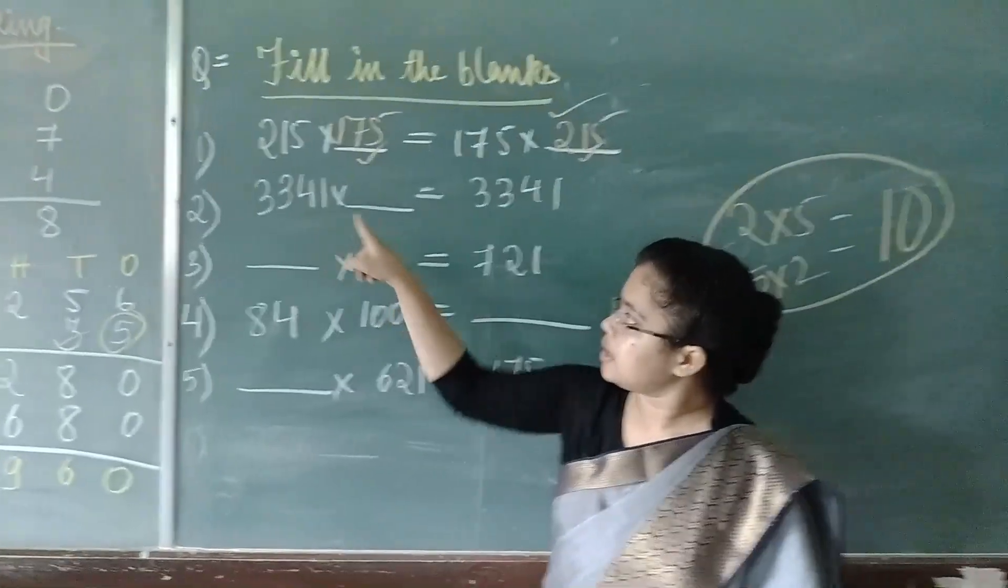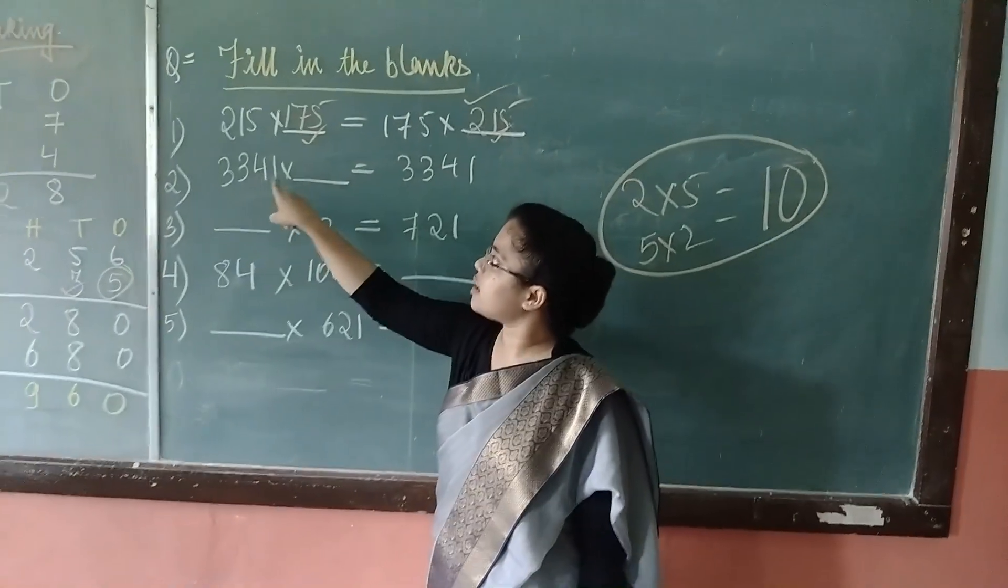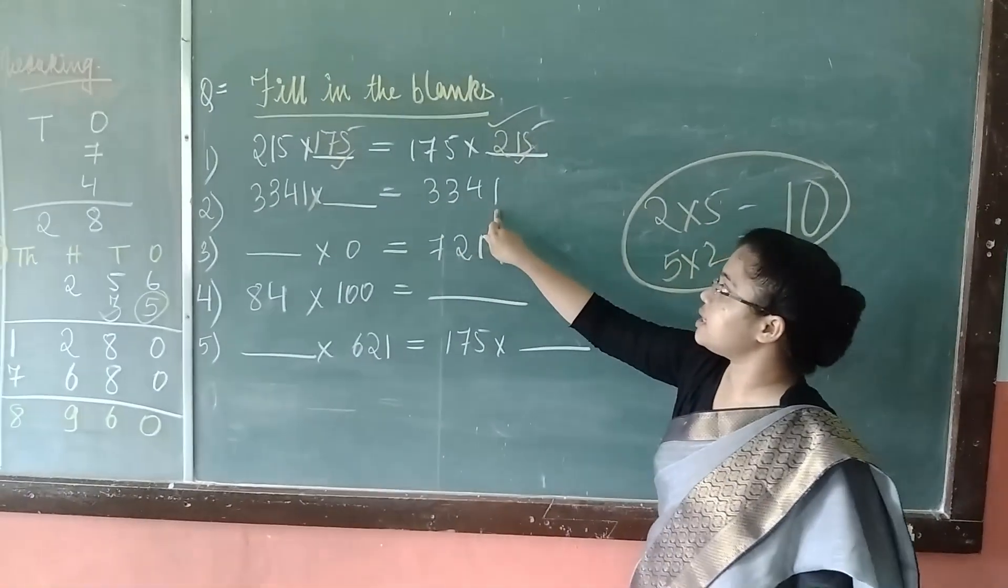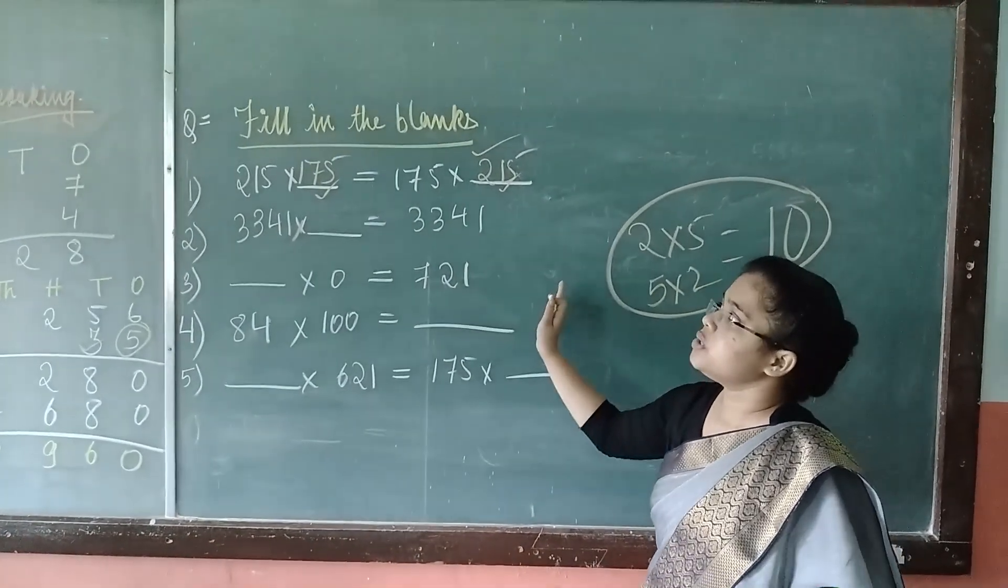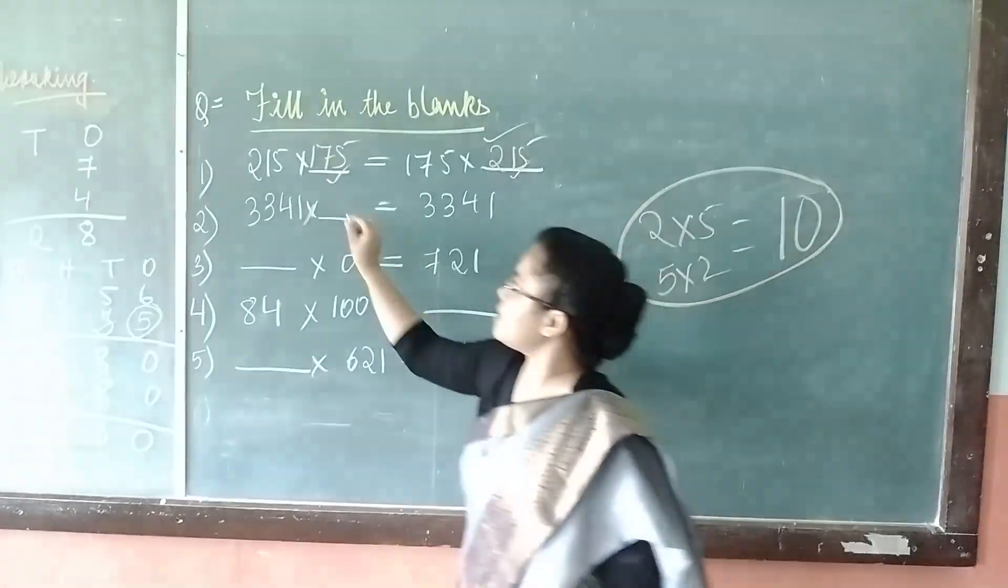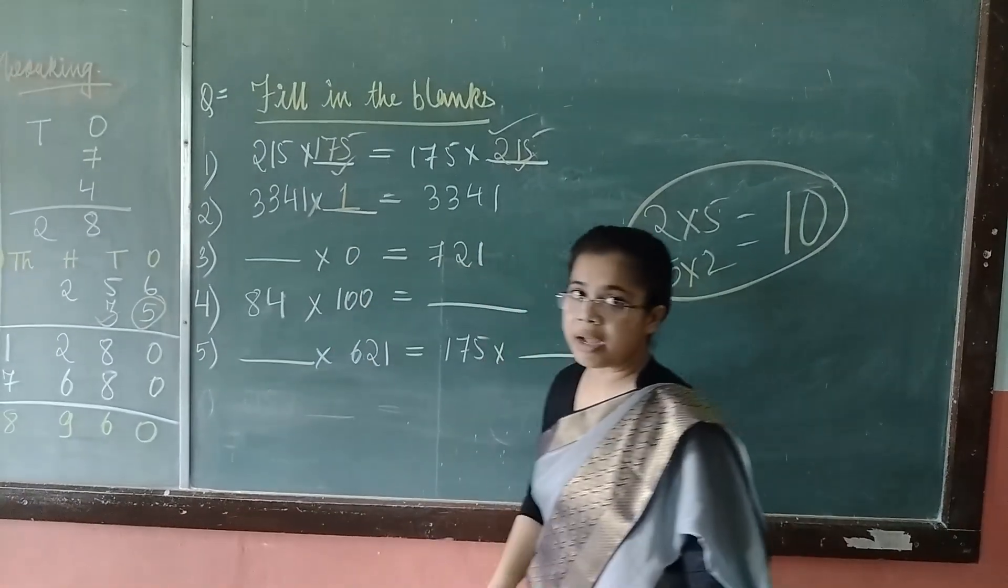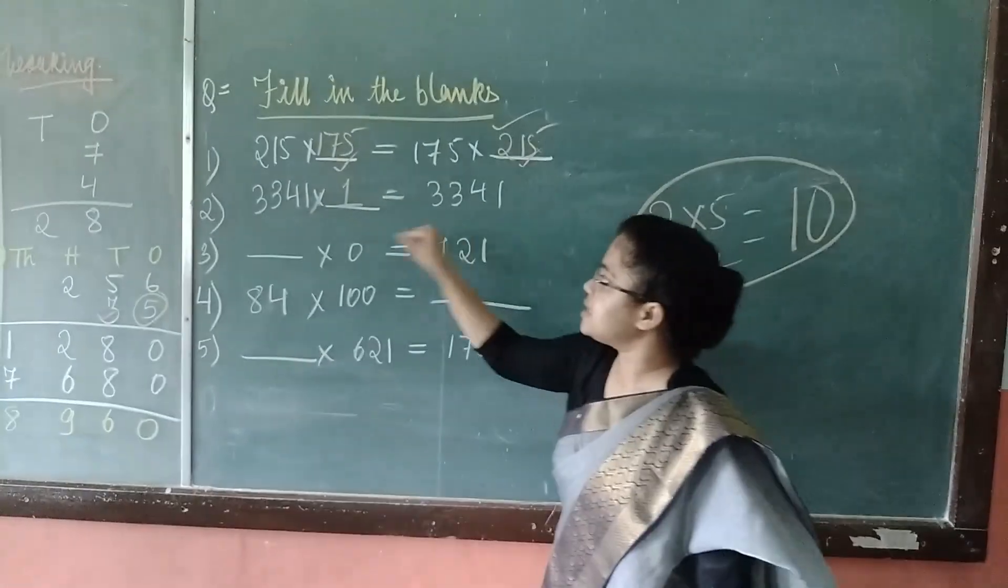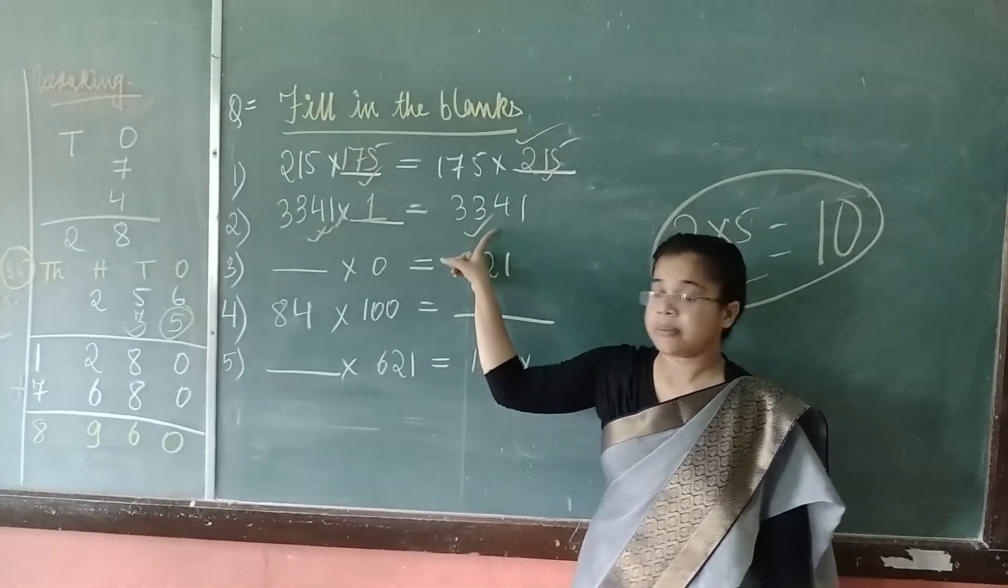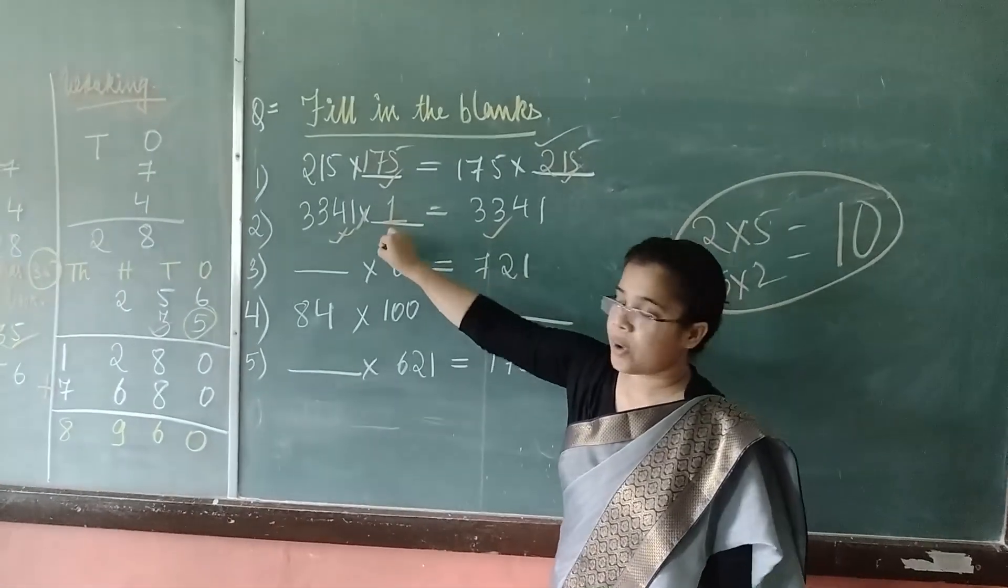Now, here when you can see 3,341 multiplied by dash is equals to 3,341. So, in the properties of multiplication, we already learnt that when we multiply a number by 1, then we get the product as the number itself. And here the product is same. It means that it is multiplied by 1.